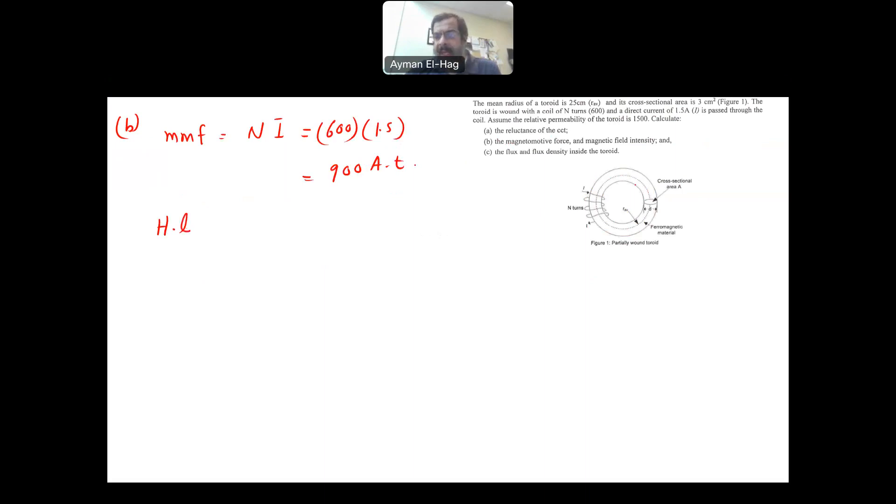What is the magnetic field intensity, which is H? H times L. L is the path of the length of the path of the magnetic flux, is equal to the MMF or equal to NI. So your H, magnetic field intensity, is equal to NI, which is 900, divided by your L. And L is basically 2 pi times 25 times 10 to minus 2.